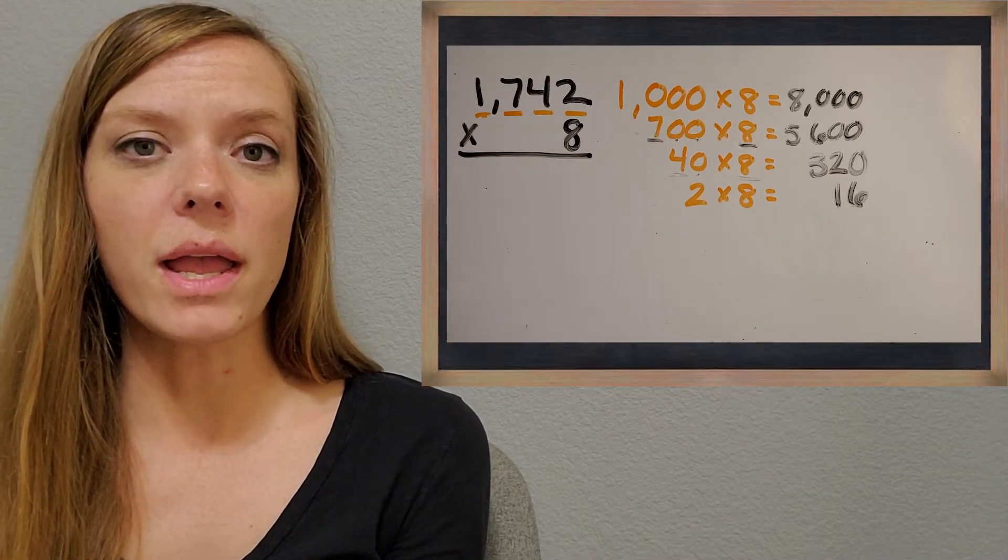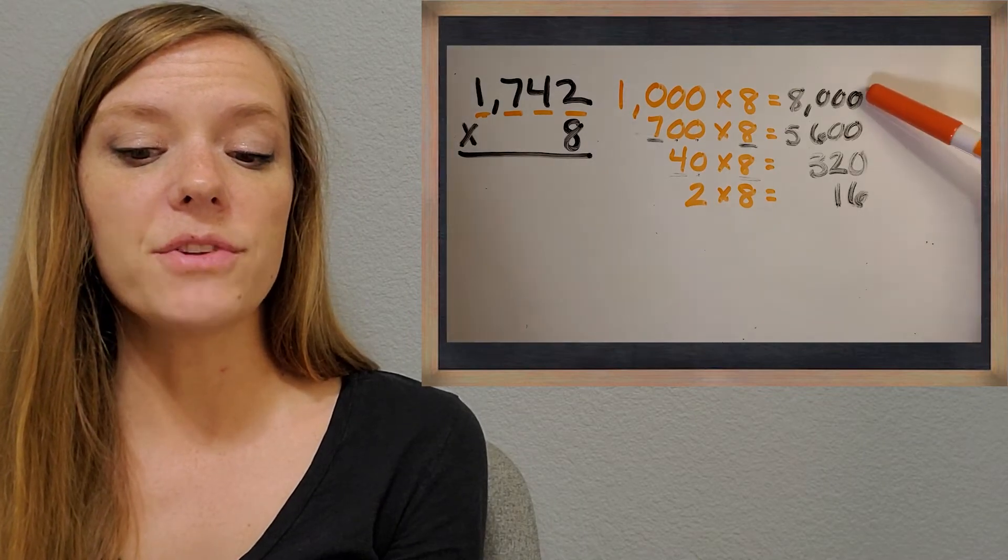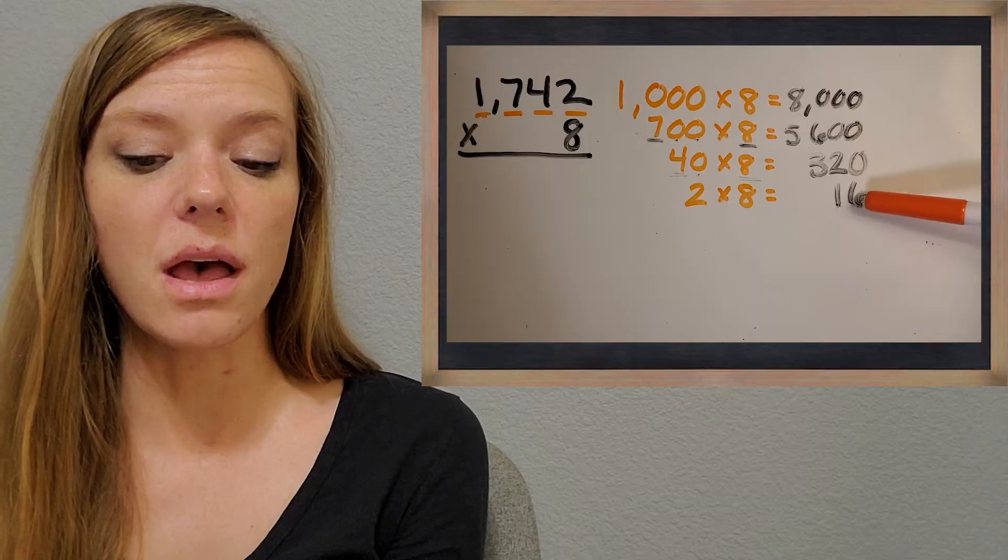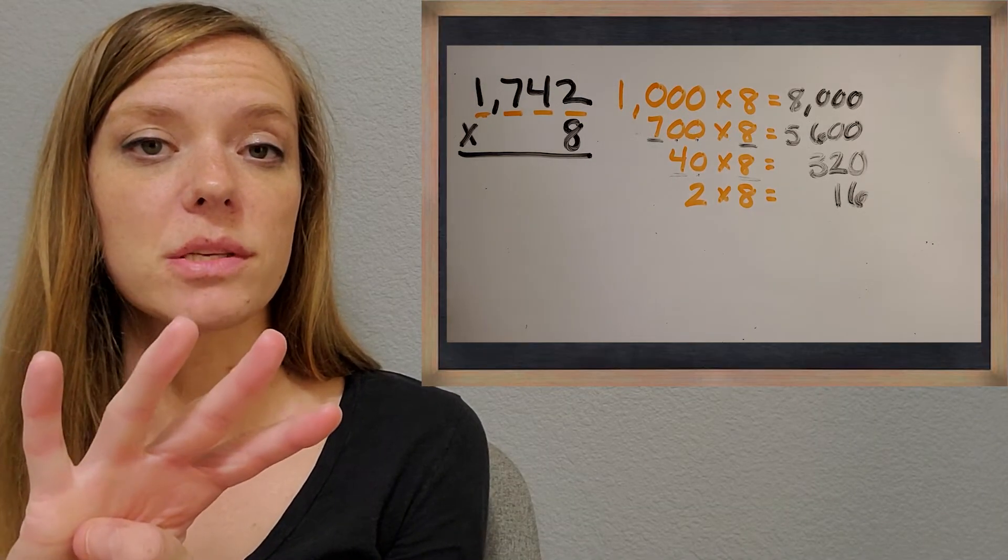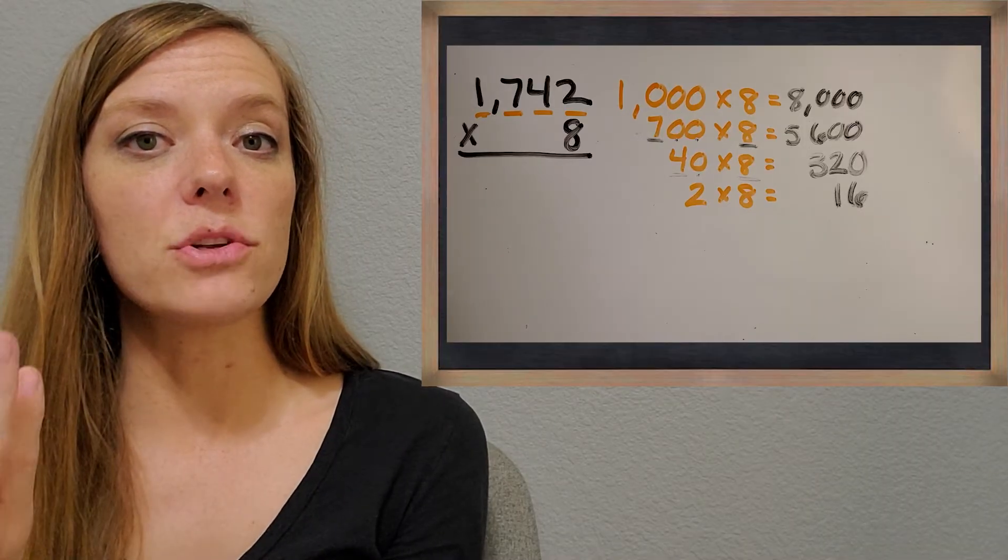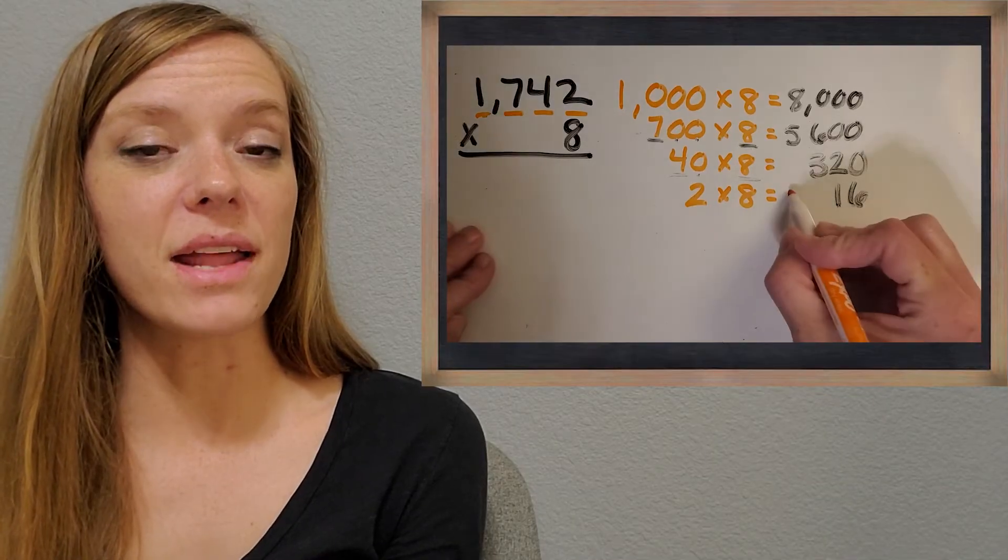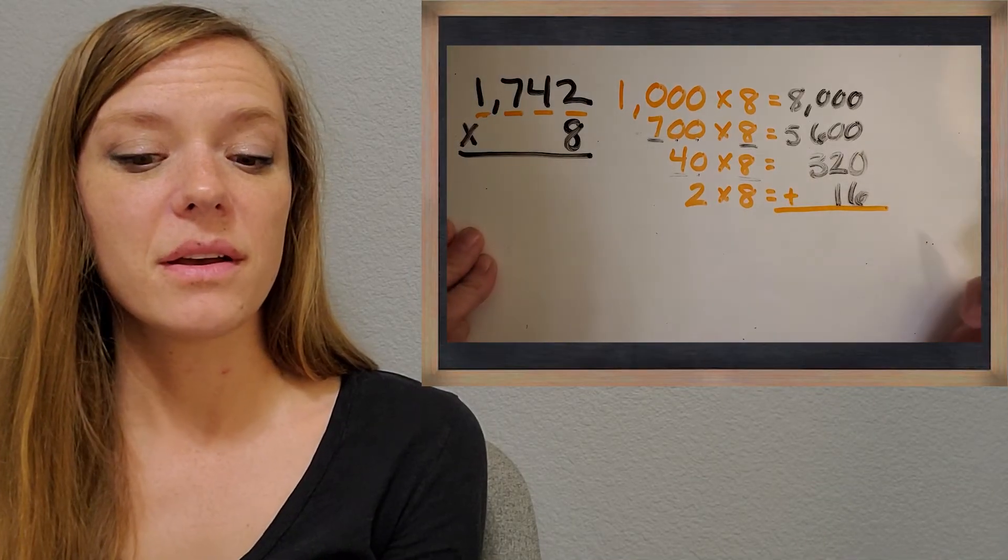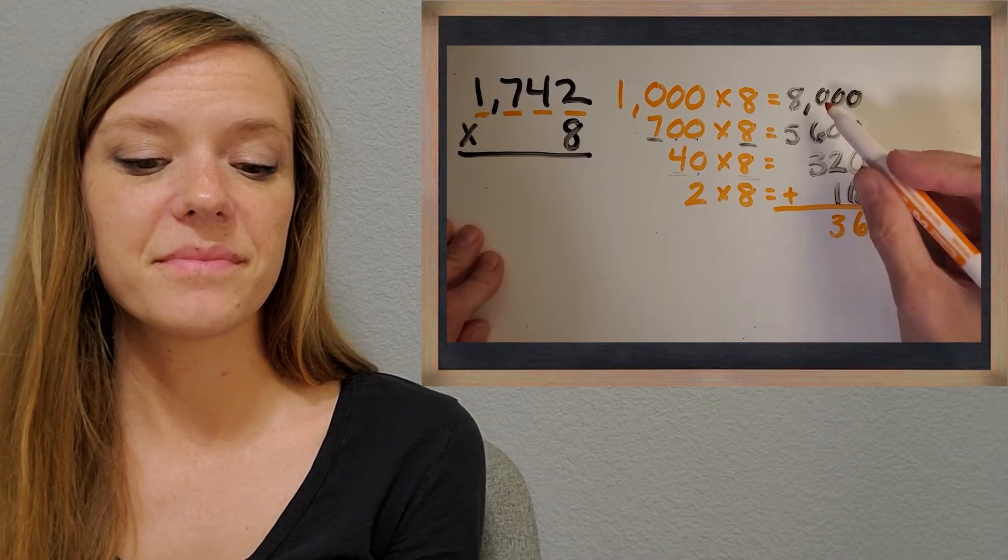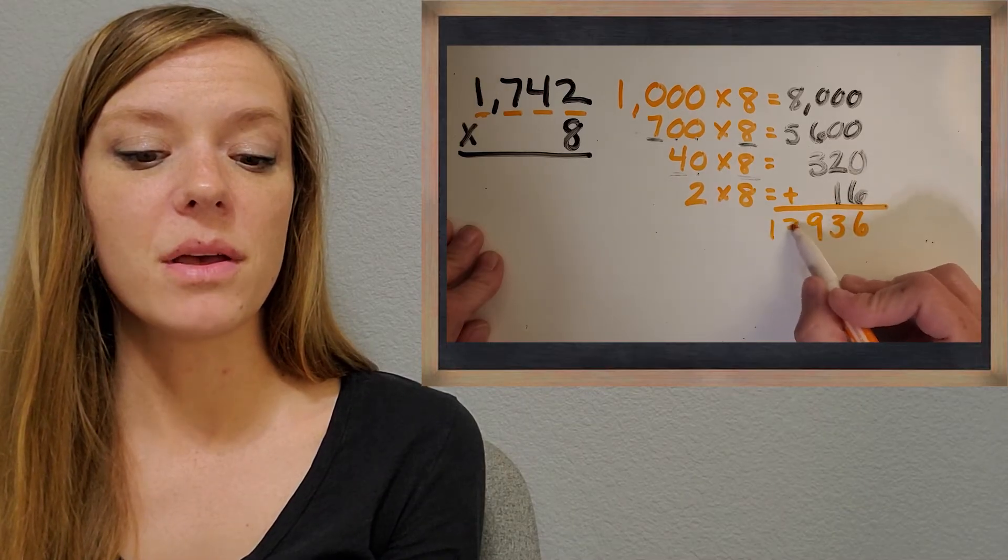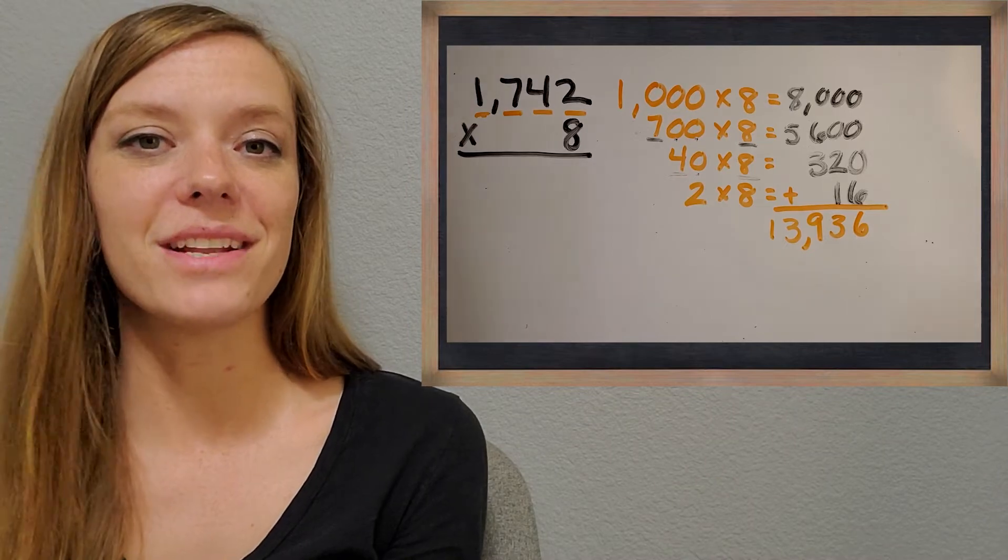And the reason why this is called partial products is as you can see, we have a lot of different parts of the answer written down. We have four different parts. So what do you think we should do to find the total answer? Awesome, we're going to add those amounts up. So add them up with me and let's see what we get. All right, awesome. 13,936. Great job.